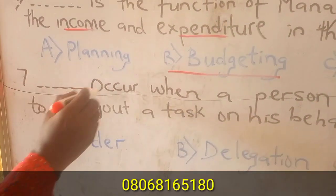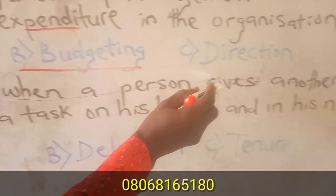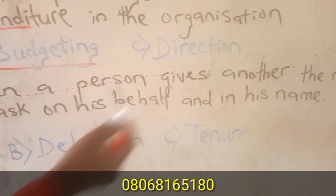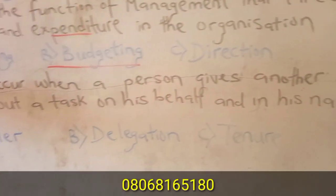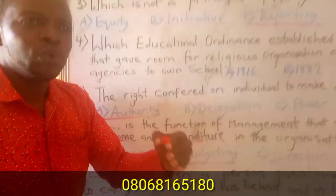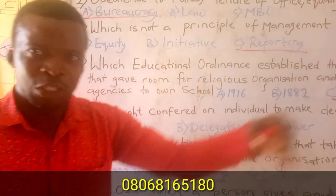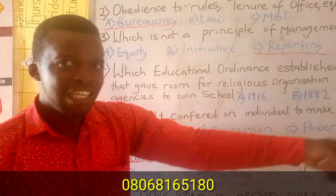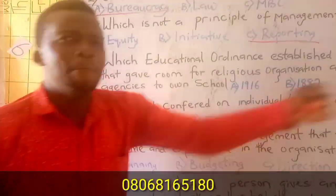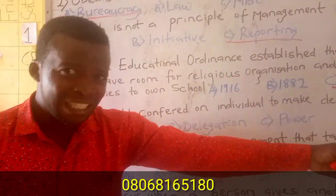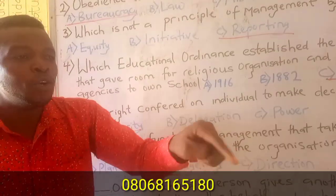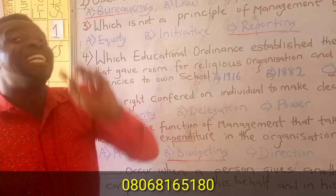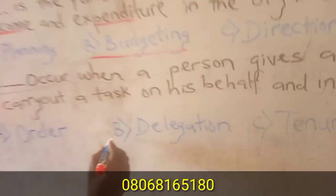Question seven: What occurs when a person gives another the right to carry out a task on his or her behalf? When you are a manager and you want someone to represent you, it is called delegation. You are delegating a responsibility. When you assign responsibility to somebody on your behalf in your absence, it is called delegation. The person who has been sent is called the delegate, while the manager is called the delegator. The answer is delegation.